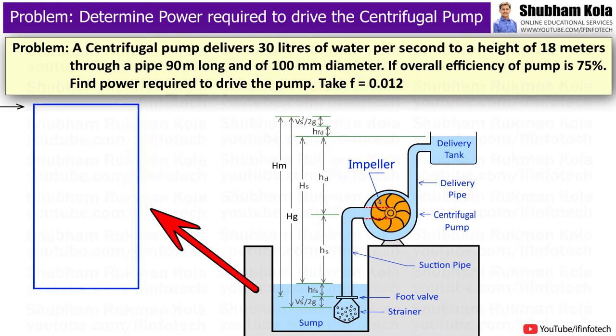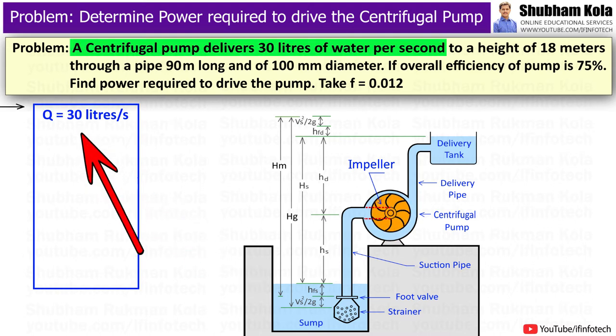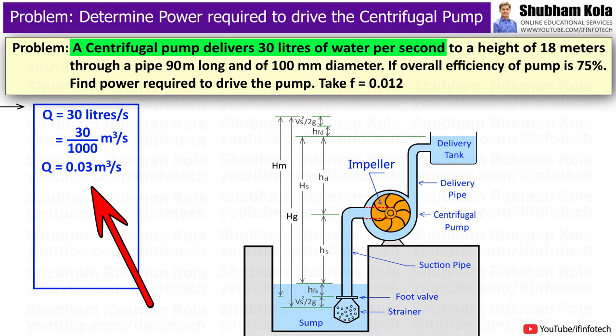To solve this problem, first I will write down the given data provided, where pump delivers 30 litres of water per second, i.e. Q is 30 divided by 1000, i.e. 0.03 m³ per second.